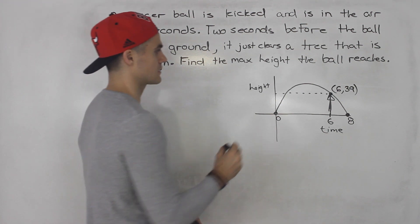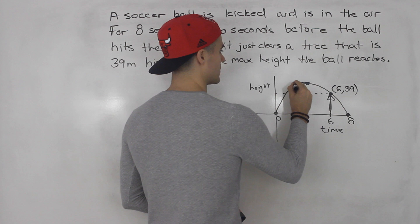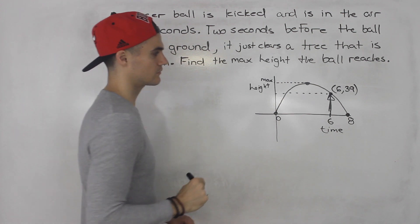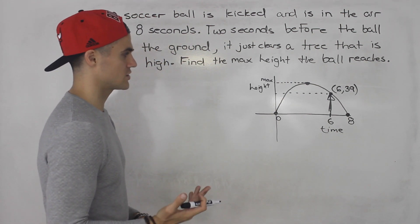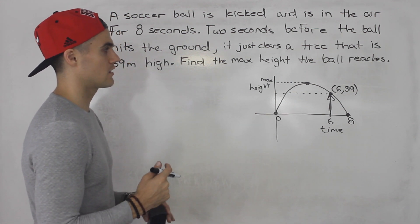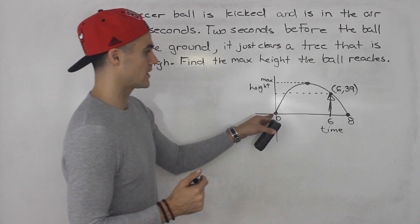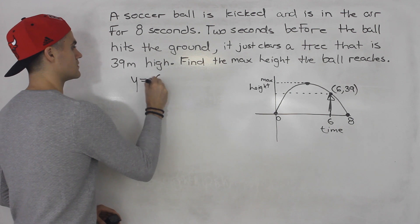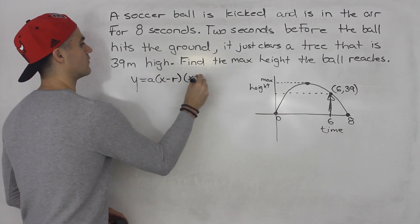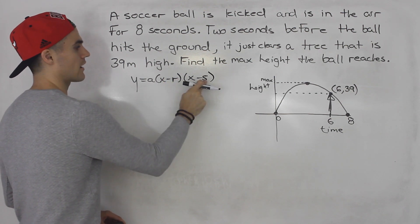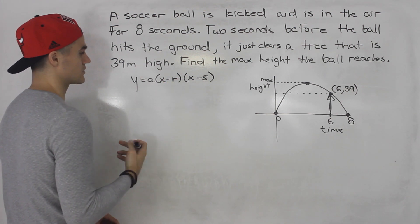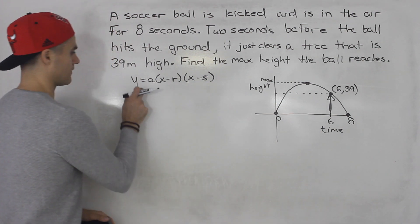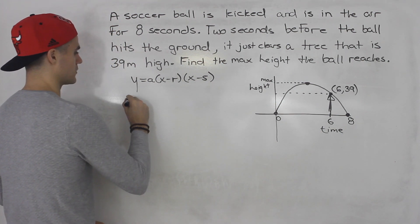And the question is asking for the max height. So basically, the question is asking for this max height right there. So how can we do that? Well, we first would have to find an equation with the information that we are given. So notice that we're given the two intercepts of this quadratic. So it's probably best to find this quadratic in factored form. So x minus r, x minus s, r and s are the intercepts. So this specific question, we're given intercepts of zero seconds and eight seconds. And then we're not really working with y, we're working with height. So I'm going to put an h here.